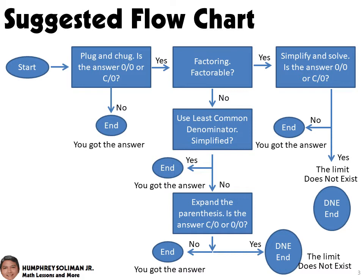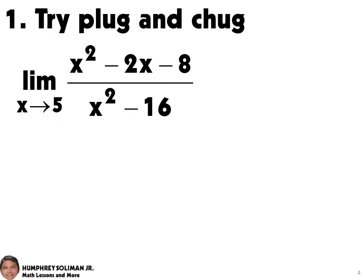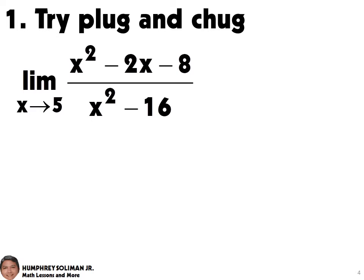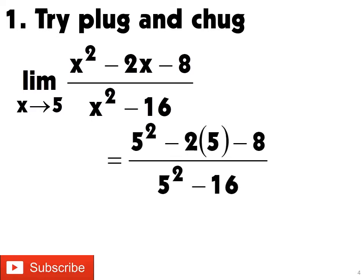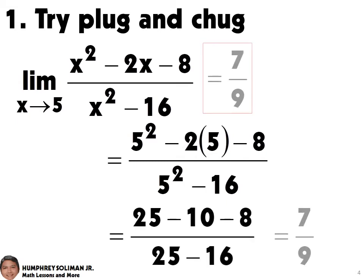Let me show you how to use this flowchart using some examples. To solve for the limit of the function, we will try plug and chug first. We will substitute the 5 into the function and simplify. This will give us 7 over 9, and since this is not a 0 over 0, this is already the answer.